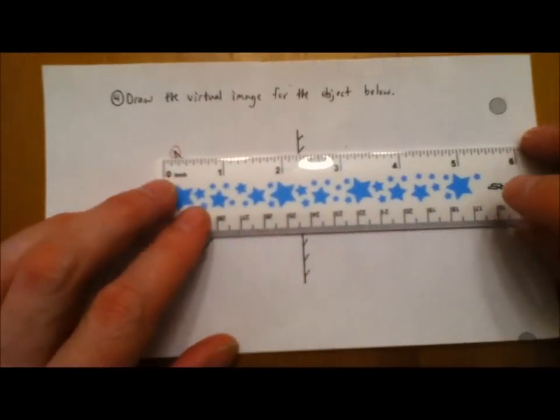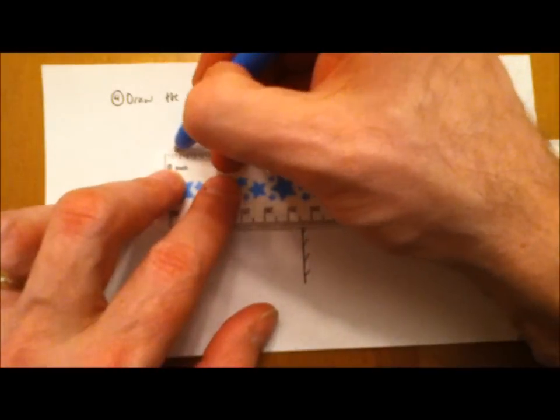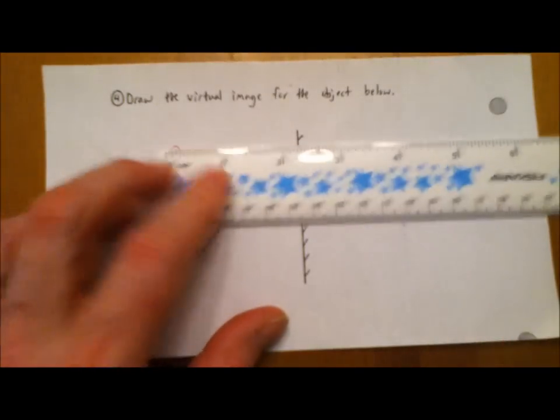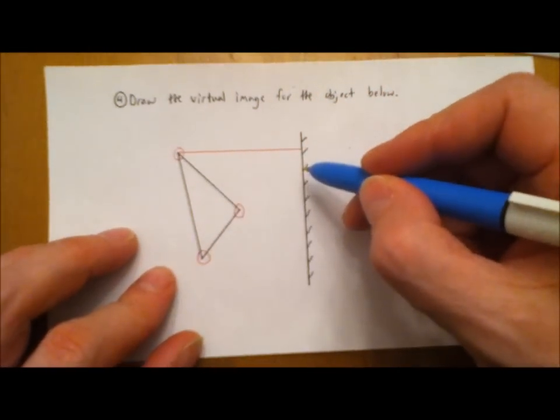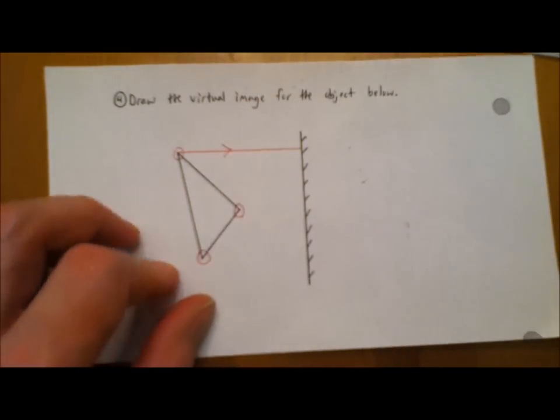So what you need to do is take your ruler at a 90 degree angle, a protractor here probably would be useful, but I can kind of eyeball it. Make sure that line is at a 90 degree angle as best as you possibly can, draw it at a 90 degree angle to the mirror.